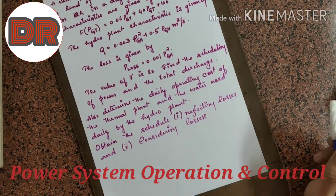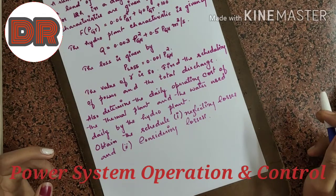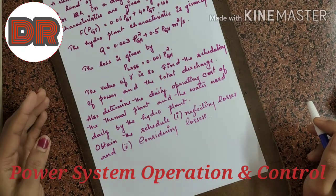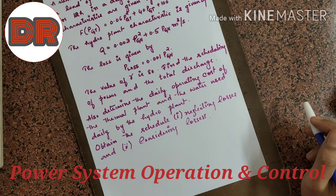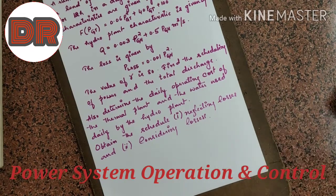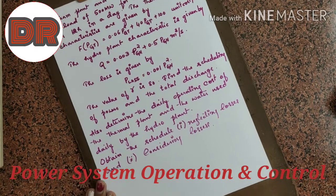Now, how to identify whether a given numerical is based on Algorithm 2 or 3. Algorithm 2 is short term hydrothermal scheduling using gamma-lambda iterations, and Algorithm 3 is the same using penalty factor. In Algorithm 2 it is an iteration process, so tolerance values are necessary. In Algorithm 3 it is not an iteration process — it is a one-step process — so no tolerance is needed. In the numerical, tolerance will not be given.